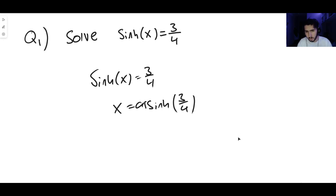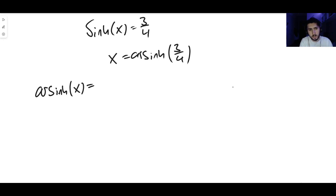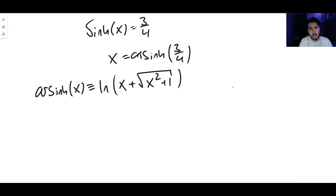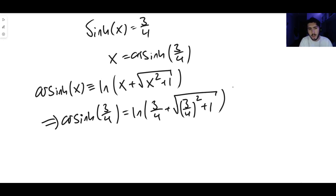You could leave it like that, or you could write it in a much nicer way by using the definition of arsinh. We know that arsinh of x is identical to the natural log of x plus the square root of x squared plus one. Therefore, arsinh of three over four is just equal to - substituting three over four for x - the natural log of three over four plus the square root of three over four squared plus one, and we can do some simplifying here.